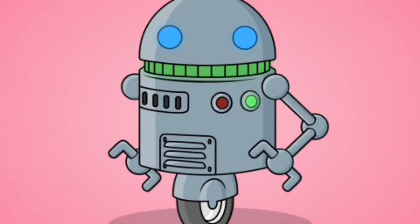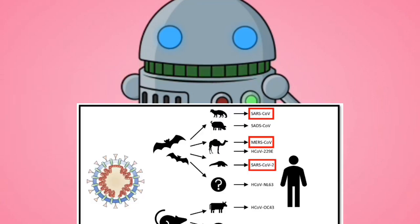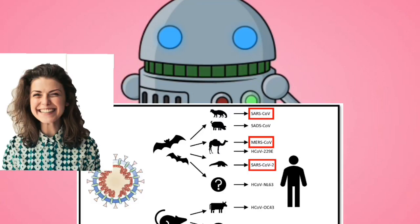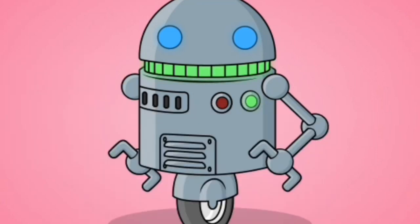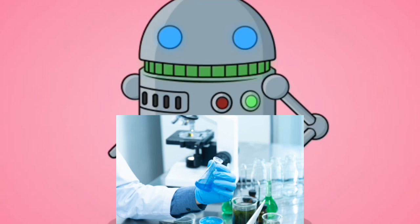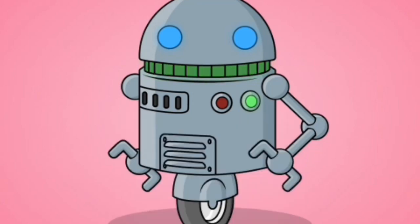It's still not confirmed how it came to us, but there are some hypotheses about its origin. Some scientists say it came from bats and later spread to humans through an intermediate host. Another hypothesis says it may have come from seafood. Some scientists have claimed it came from a laboratory in Wuhan, which was also reported by Chinese news and websites, but it's not confirmed yet.